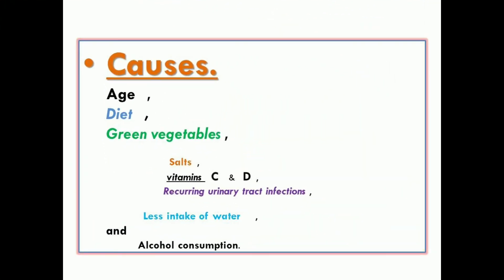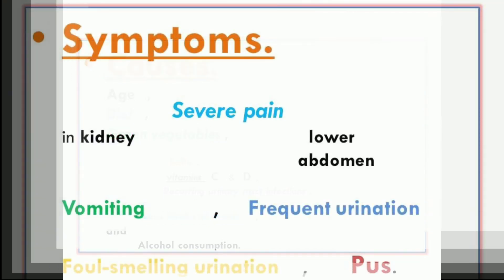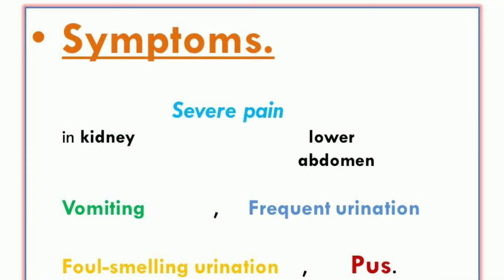اب ہم پڑھتے ہیں گردوں میں پتھری کی وجوہات کیا ہیں — کن وجوہات پر یہ stones بنتے ہیں۔ Number one: age factor، diet جس میں زیادہ تر green vegetables ہیں جو highly rich source ہیں، urinary tract infection، less intake of water — پانی کا کم استعمال — and alcohol consumption — شراب کا استعمال۔